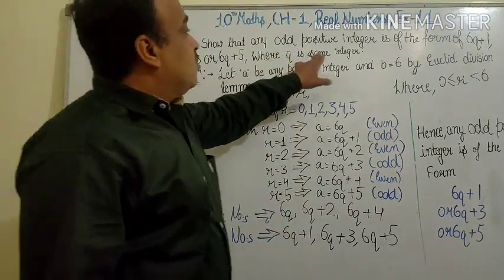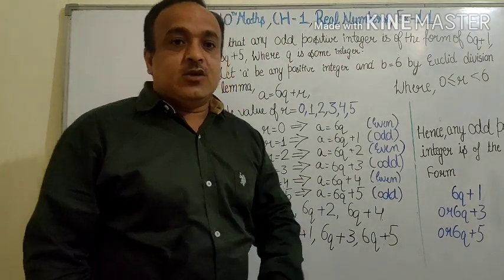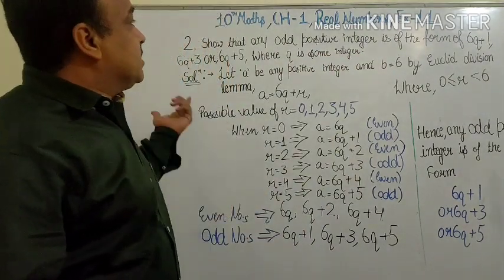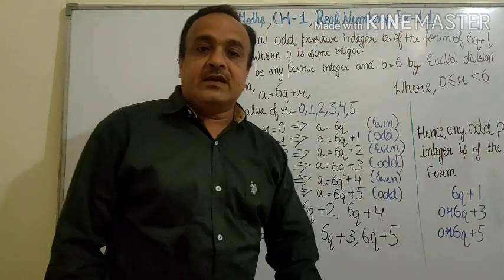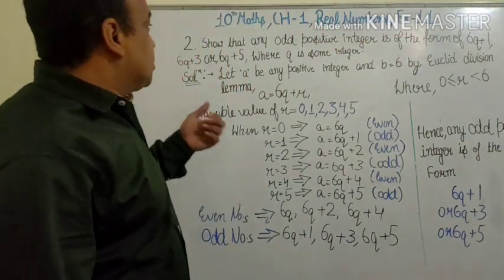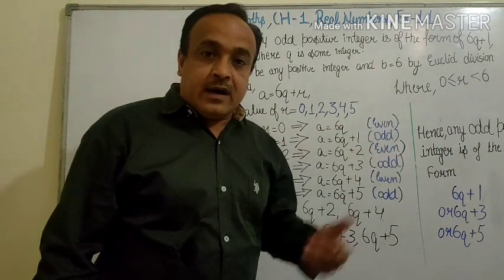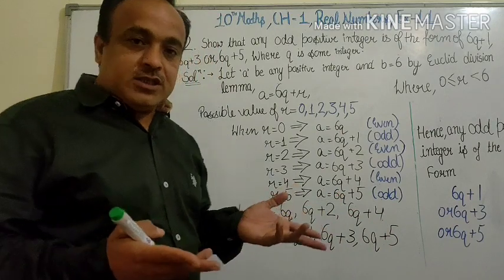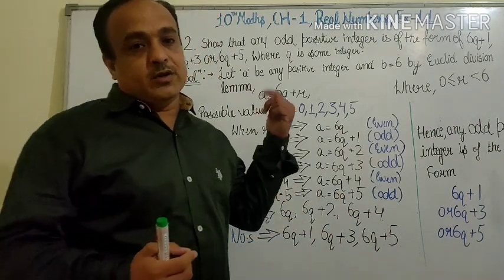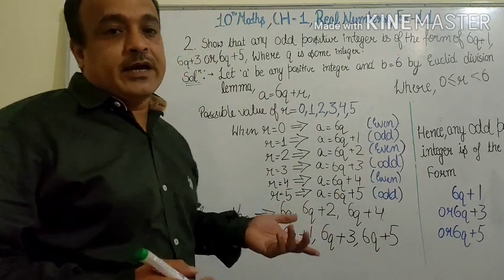Here we have to prove this using a simple lemma of even and odd. Let a be any odd positive integer and b equal to 6. Then according to Euclid's division algorithm,